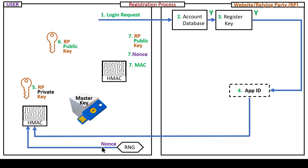A random number nonce is generated along with an embedded master key. This master key is factory-set inside and never leaves the hardware security key and never changes. Those three inputs are sent into a hash-based message authorization code HMAC, in this case using SHA-256.